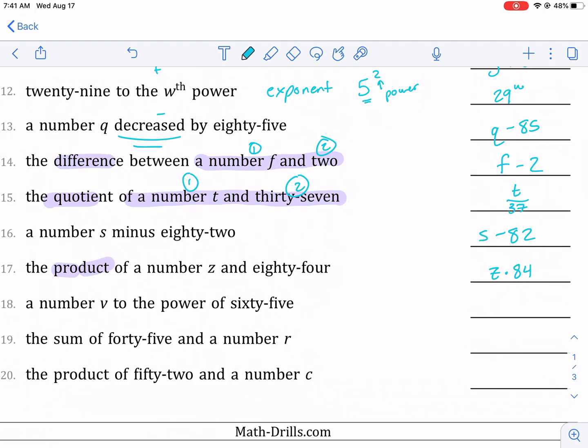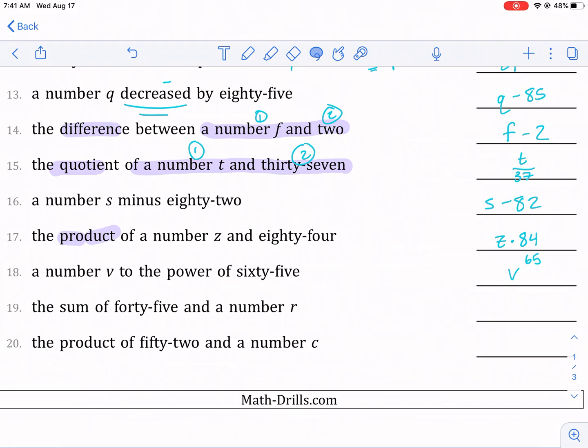A number v to the power of 65—this time we have the variable to the 65th. I don't know why I wrote it over there, let me move it over. So v to the 65th power. The sum of—here's another new word: sum. Sum means we add, it's the total. So 45 plus r—doesn't matter the order. The product of 52 and a number c—so 52 times c.